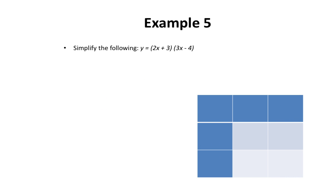In our fifth example, we want to simplify: y equals 2x plus 3 multiplied by 3x minus 4. This is an even more complicated question, but we use the same steps. I'm going to write 2x and positive 3 in the chart, and 3x and negative 4 below. Let's multiply 3x by 2x: 3 times 2 is 6, and x times x is x squared — so 6x squared.